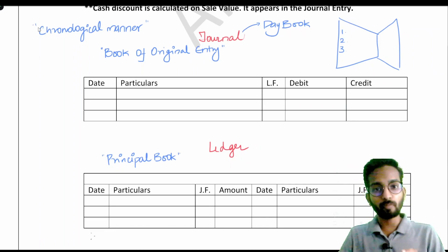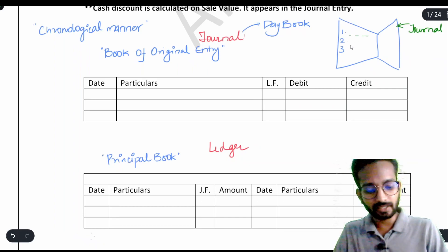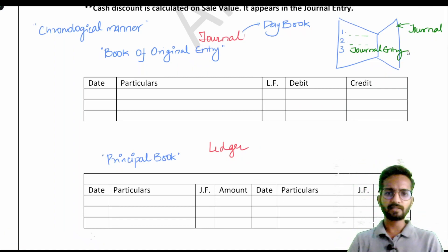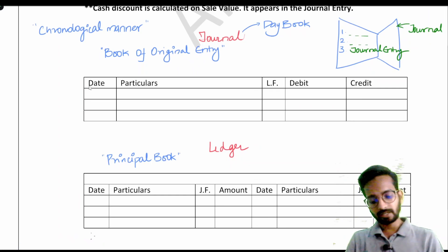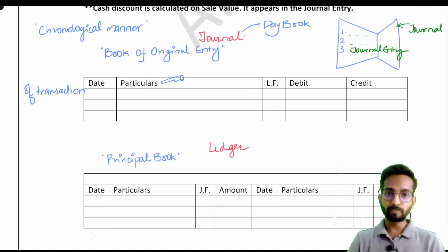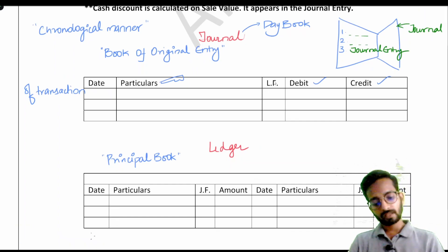Now let's learn the format for putting entries in this book. When you enter data in journal, it is called a journal entry. In your question they will say 'pass the journal entry' or 'journalize these transactions.' The important parts of the format are: date, which tells the date of transaction, and particulars, which tell you what account should be debited and which account should be credited. This is the debit and credit side — that is the format of the journal.